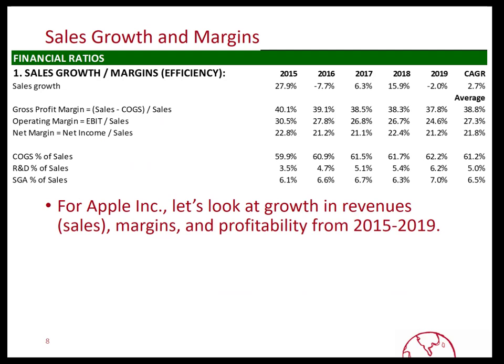Let's take a look at Apple, how it's done from 2015 to 2019. Here we can see its sales growth from year to year. Below that we see the gross, operating, and net margins for the company. And we look at how important COGS — cost of goods sold — R&D, and sales general and administrative are as a percentage of sales for each year. Notice that we're looking at multiple years and calculating the average. For sales growth we're looking at the compound annual growth rate, and for the others we're looking at the simple arithmetic average across these five years.